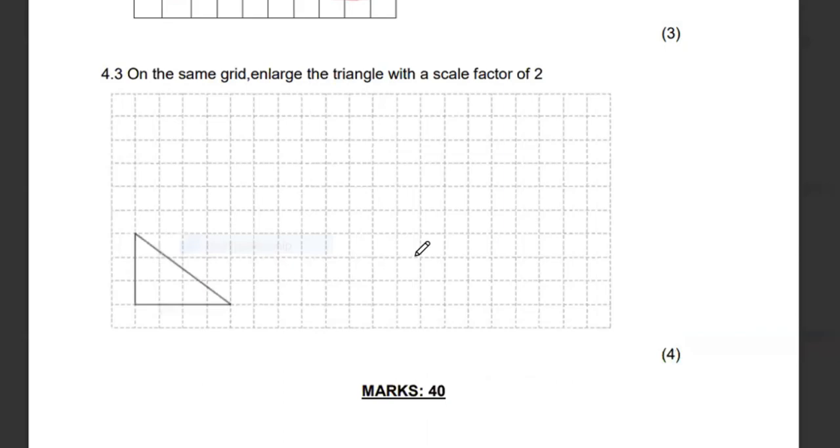Then on the same grid, they want us to enlarge this triangle using a scale factor of two. When you're enlarging, you just make something bigger. So if we have, how many blocks are these? There are three blocks. One, two, three, four. We have four blocks. And then one, two, three. I don't know what's happening there, but let me just focus on these two. So I'm going to multiply by two, multiply by two. So I need to have six blocks. So if I start from here, I'm going to have one, two, three, four, five, six up to here. And then I can just draw this with my ruler.